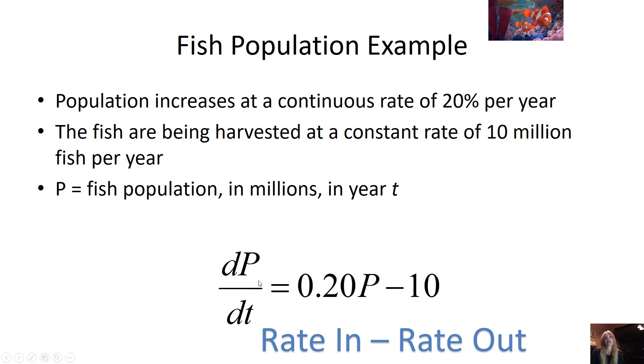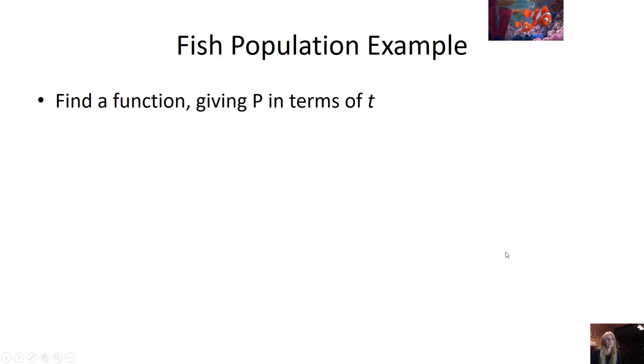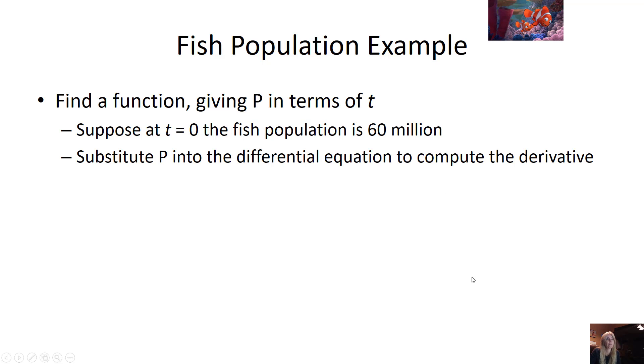So my change in population over change in time is 20% of the population at a particular time. So now this is an actual function, and then minus the harvested at 10 million fish per year. So if I want to find a function giving P in terms of t, then what I could do is I could look at this and say, suppose at the beginning, at the beginning of time, I have a fish population of 60 million.